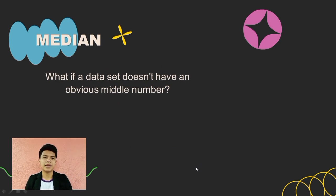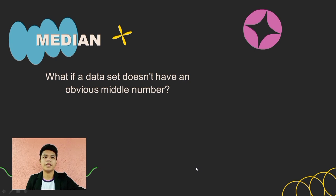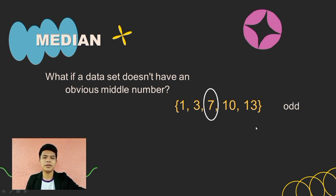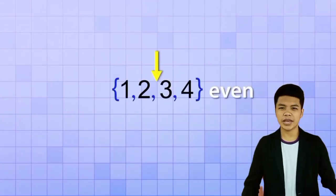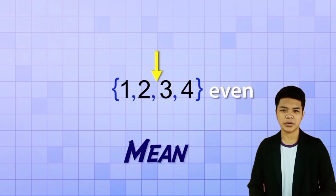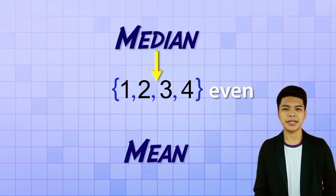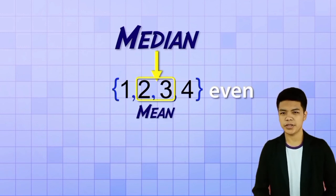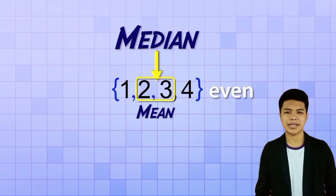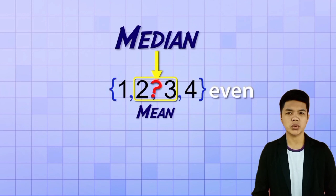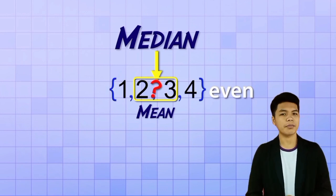But what if a data set doesn't have an obvious middle number? In our earlier example, the members of the data set were odd. But how can we identify the median if a data set has an even number of members? If that's the case, we can use what we learned about the mean to help us out. If the data set has an even count of numbers, then to find the median, we take the middle two numbers and calculate their mean or average. By doing that, we figure out what number would be exactly halfway between the two middle numbers, and that number will be our median.